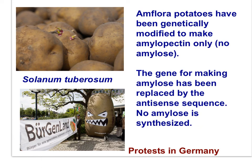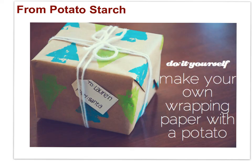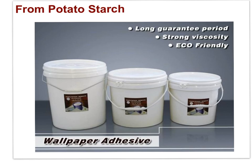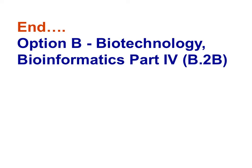Amflora potatoes have been genetically modified to make amylopectin only — no amylose. The gene for making amylose has been replaced by an antisense sequence, so no amylose is synthesized. Amflora was approved for industrial applications in the European Union in March 2010, but was withdrawn from the EU market in January 2012. In paper manufacturing, the amylopectin starch from Amflora potatoes makes for glossier paper, and it makes concrete adhere better and keeps glue liquid for longer.